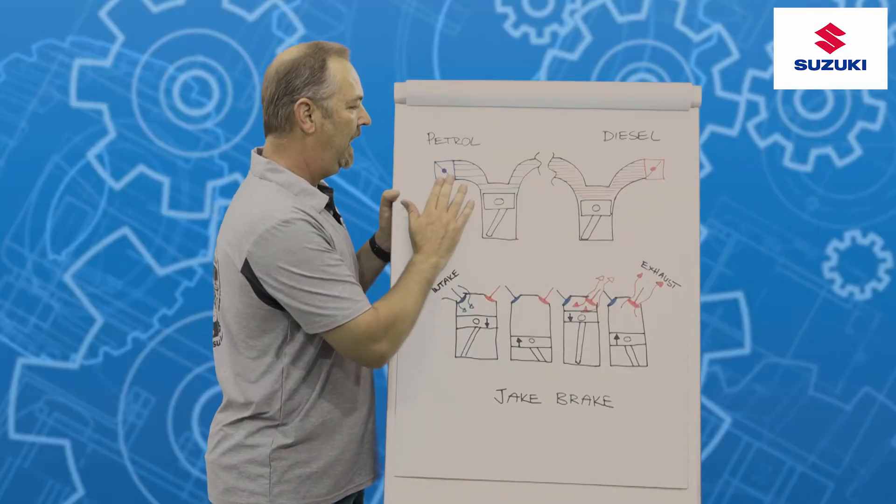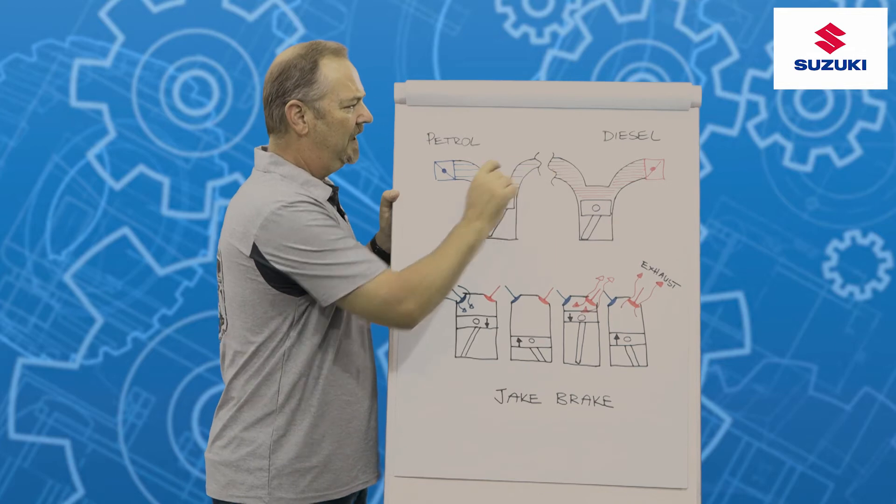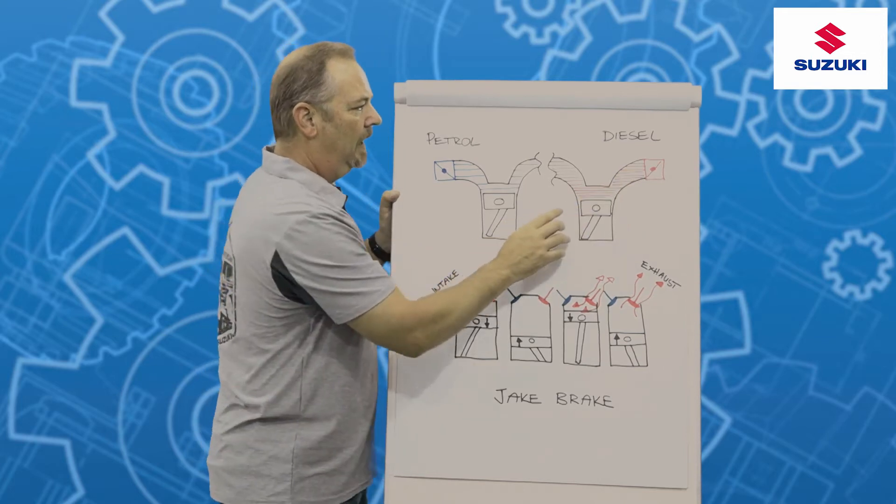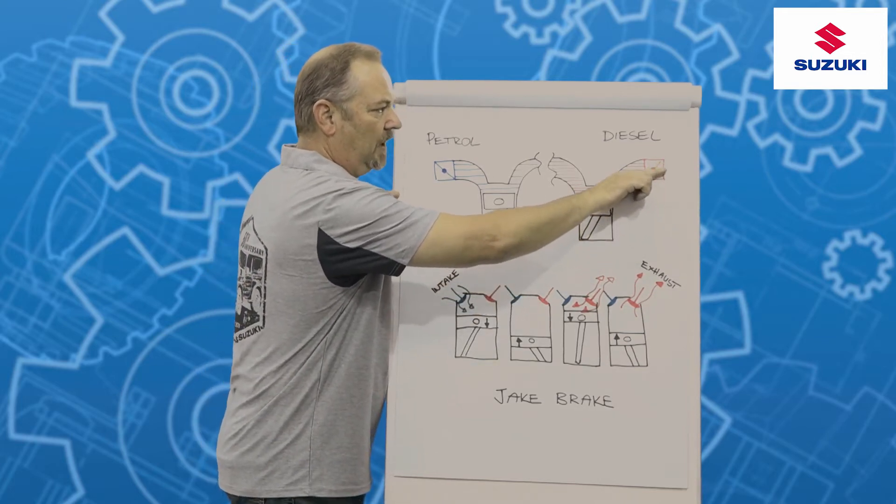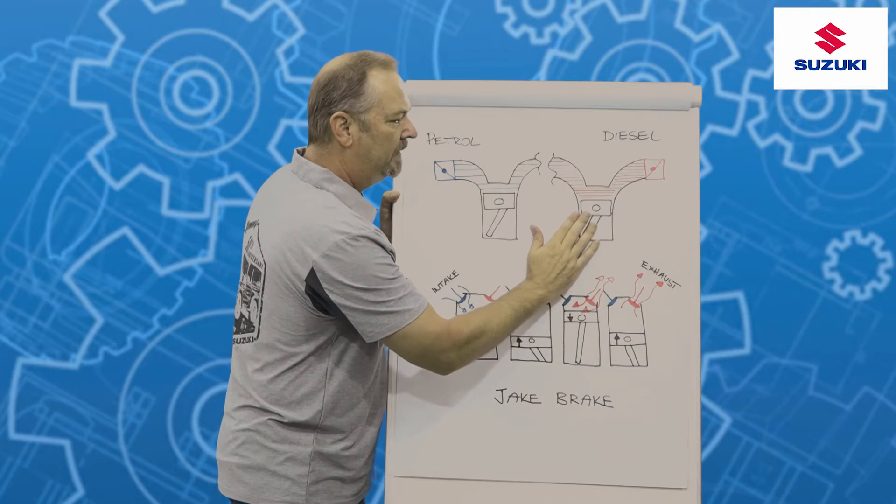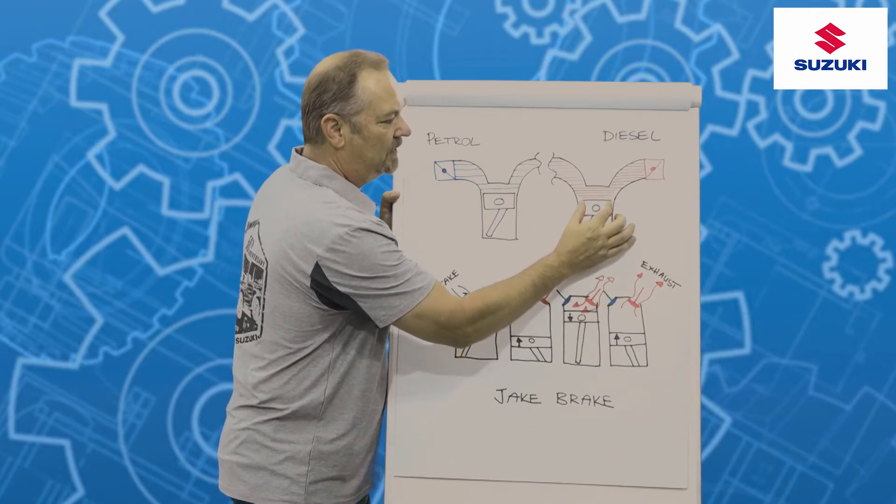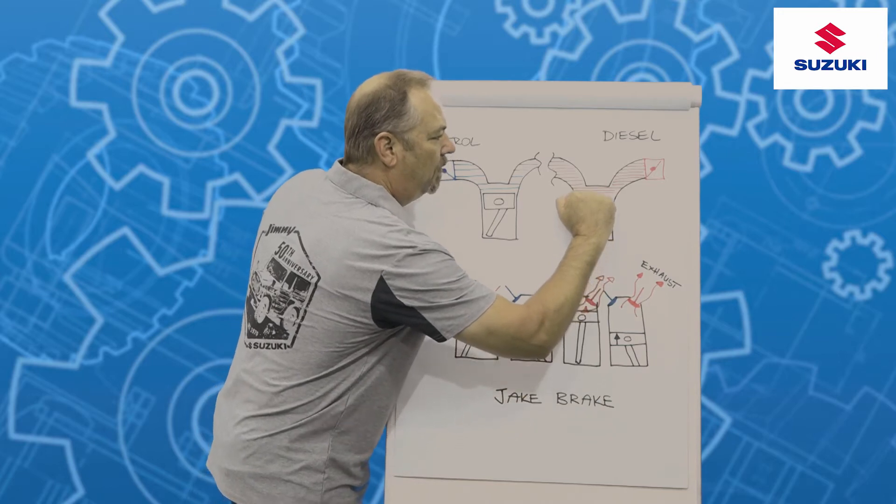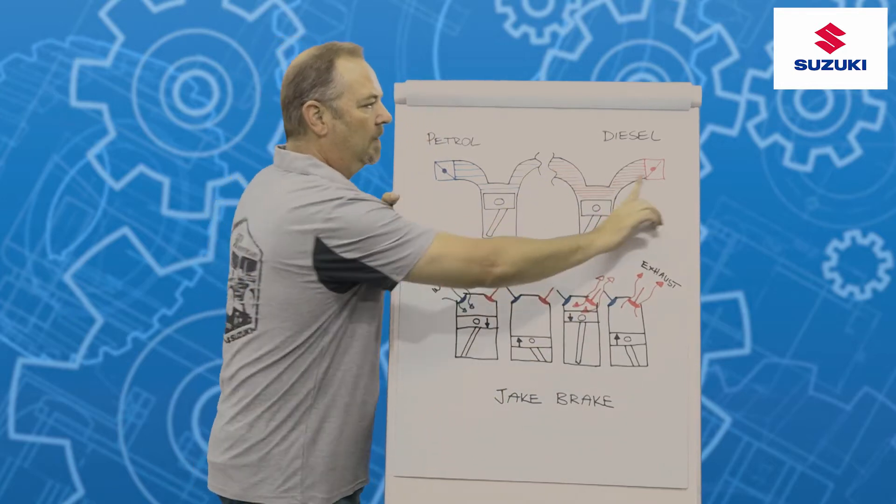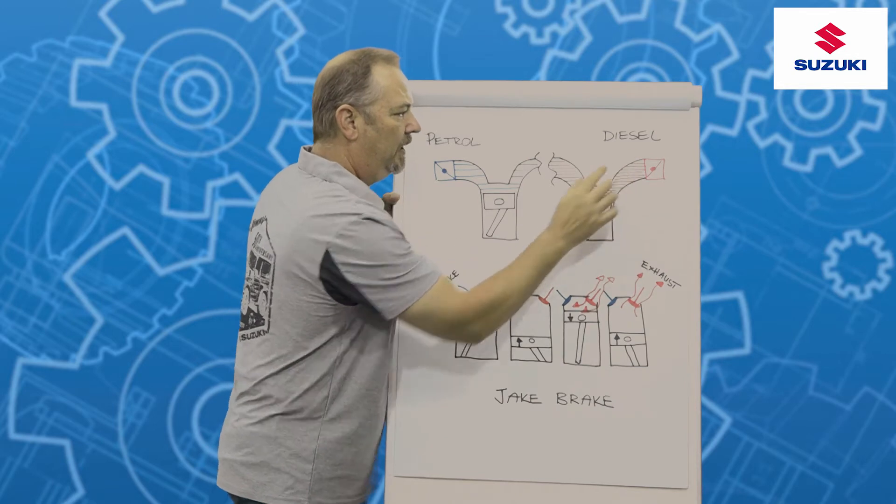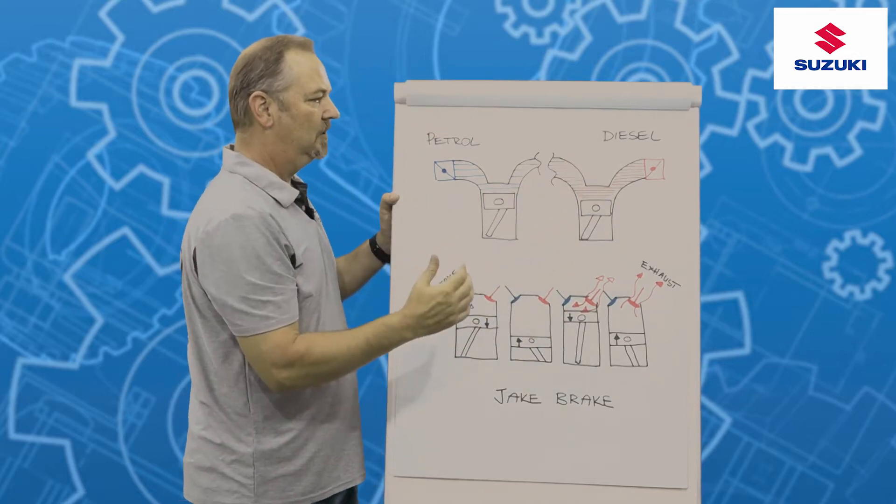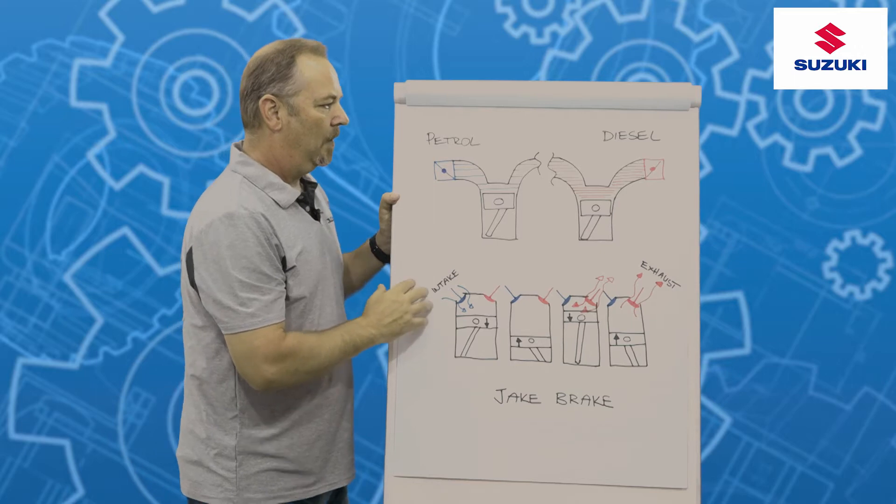Now on a diesel engine we don't have a throttle body on the intake side, so we don't have a butterfly valve here. In fact we find the butterfly valve on the exhaust side. Now what we want to do with this butterfly valve is open it. Unlike on the petrol side where we close it, on the diesel we open it. And the reason why we do that is because one of the ways that a diesel gets energy into its piston is when the piston moves up and creates compression, that compression has a spring effect which pushes back down on the piston. So by opening up the butterfly valve we relieve the pressure in the cylinder, and now there's not as much of a spring effect for this piston, and that assists the diesel engine in slowing down and developing our braking effect.